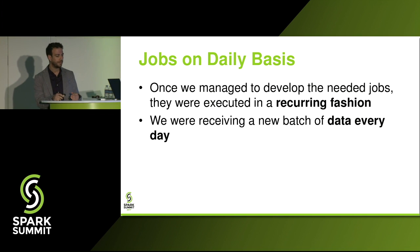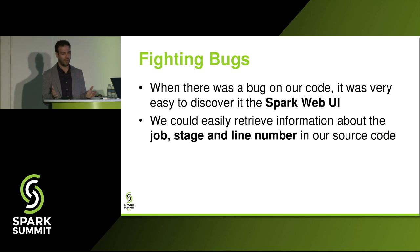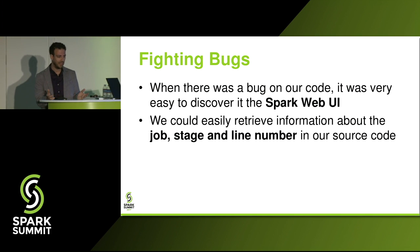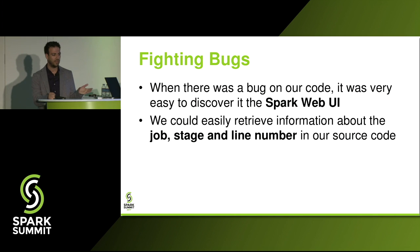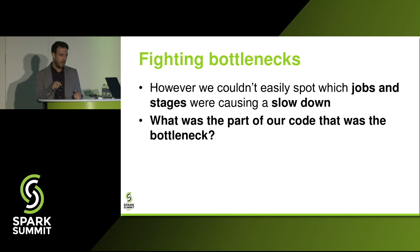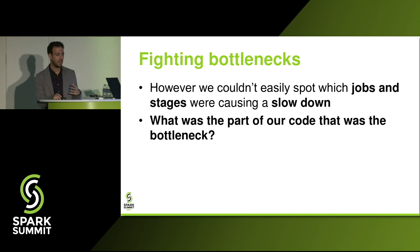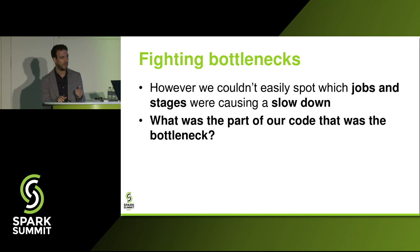When you are writing Spark jobs you have to fight bugs in your code, but it was very easy to discover those via the default Spark Web UI — you could clearly see which job failed, in what state, and the exact line number of your source code that caused the exception. But it wasn't very clear how to identify bottlenecks related to performance. We couldn't easily spot which jobs and stages were causing a slowdown, or what the exact part of our code was the bottleneck.